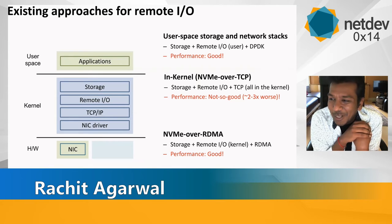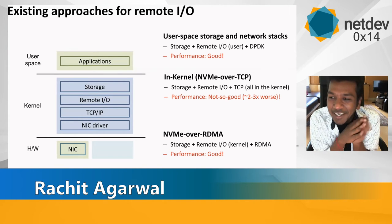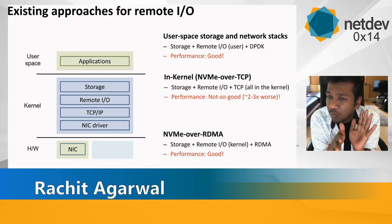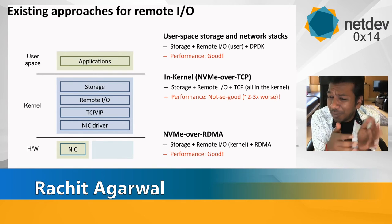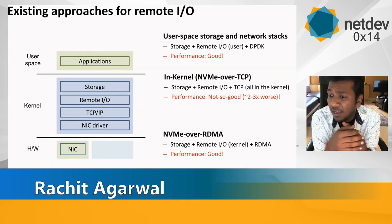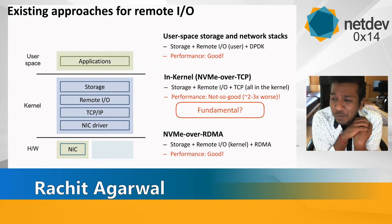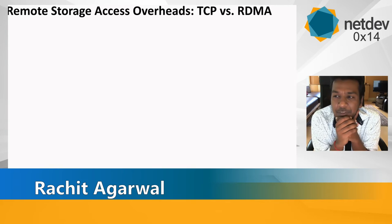Somewhere in the middle is NVMe over TCP, where we keep everything in the kernel. Today, NVMe over TCP performance can be roughly two to three times worse compared to user-space stacks or NVMe over RDMA in terms of throughput per core — meaning you need two to three times more CPU cycles, or you accept lower throughput. The question that drove us was: is this performance gap really fundamental? Do we have to give up this performance to stay with the traditional Linux stack?